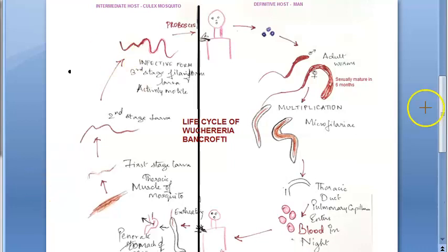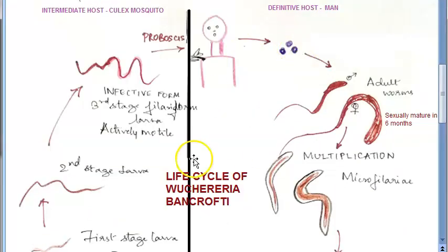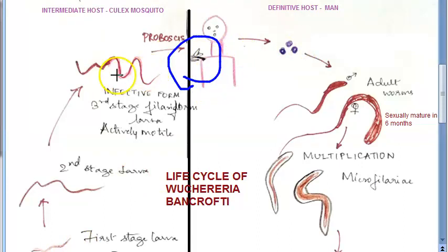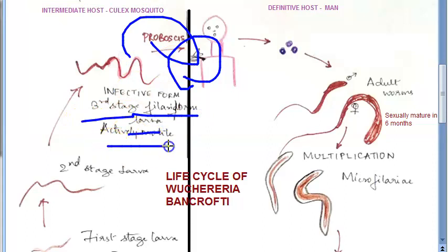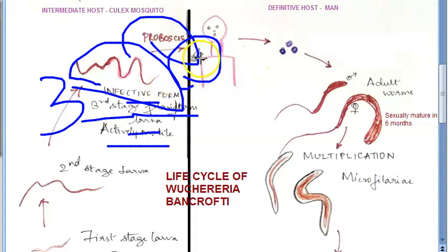Let's start with the man getting the infection. He got bitten by an infected Culex mosquito — this is the Indian scenario. The Culex mosquito in its proboscis had the third stage filariform larva, which is actively motile. This is the infective form of Wuchereria bancrofti. This quite large larva is present in the mosquito proboscis, and many of them must be present to infect man — they penetrate the skin.